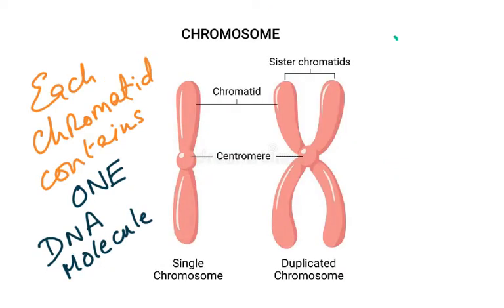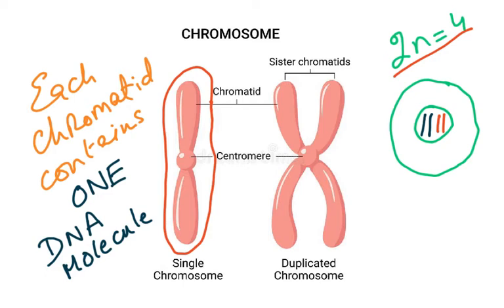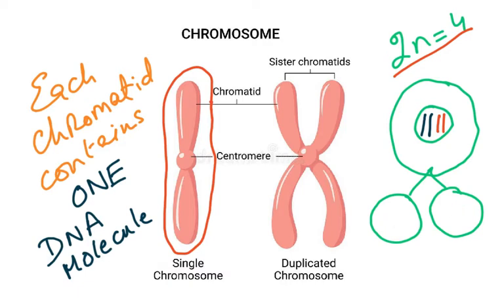If I say 2n is equal to 4, then the nucleus of this cell would have four chromosomes — two black and two red. When this cell has to divide and form two cells, both of them have to receive four. That can only happen if each chromosome forms an identical copy; the copy is called a chromatid. So there will be four reds and four blacks — twelve chromatids total.